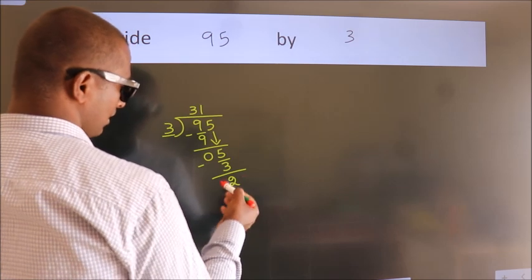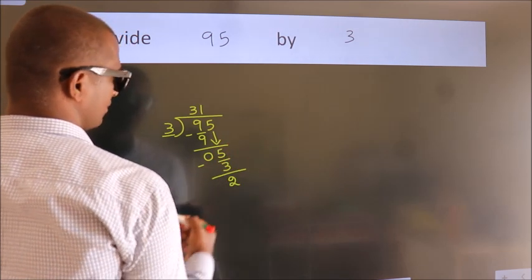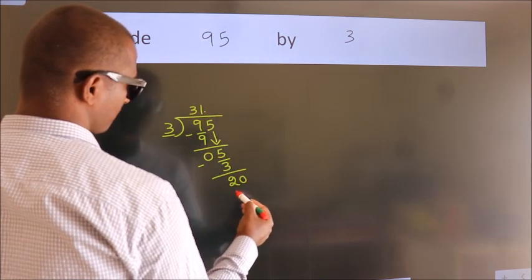We get 2. Then, after this, no more numbers to bring it down. So, what we do is we put dot, take 0.